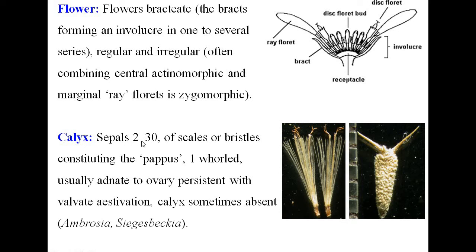The calyx: sepals 2 to 30 are scales or bristles constituting the pappus. This is a highly modified structure — the calyx is modified and it is called the pappus. It is one-whorled, usually adnate to the ovary, persistent, with valvate aestivation. Calyx is sometimes absent in Ambrosia, Siegesbeckia, and some other genera.